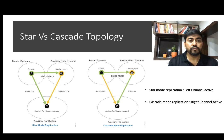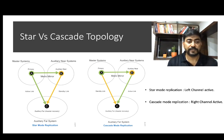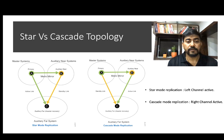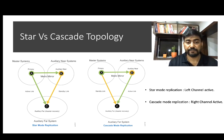Now let's look at two possible topologies of the three-site configuration: star mode and cascade mode. In star mode, the left channel — the connection between primary and aux-far — is used for replication, while the right channel remains a standby link. In cascade mode, the left channel is in standby while the right channel is used for replication traffic.